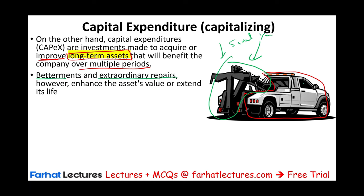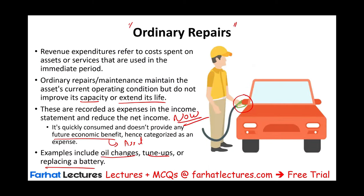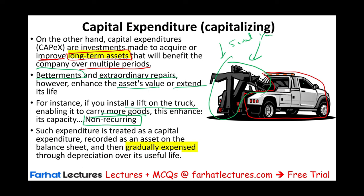Betterments and extraordinary repairs enhance the asset's value, extend its life, or increase its productivity. With the lift, the truck is more productive. Capital expenditures are also generally non-recurring — they don't reoccur the way oil changes, filling up with gasoline, or tune-ups do. Installing a lift enhances the truck's capacity and is non-recurring, versus a tune-up or oil change, which are recurring. Capital expenditures are recorded as assets by debiting an asset account, and then gradually expensed through depreciation over the asset's useful life.